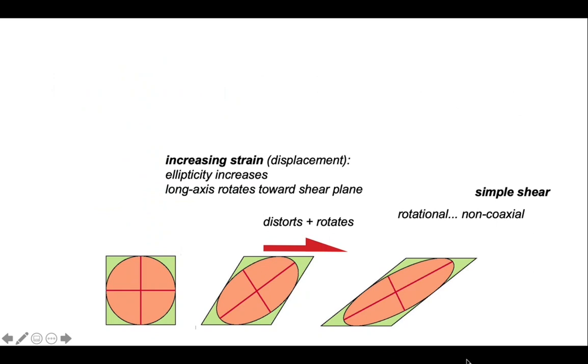So, the important rule: increasing strain in shear zones increases the ellipticity of initially circular markers.